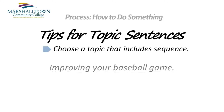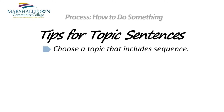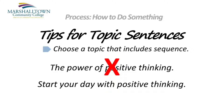Here's another example where a student wants to write about improving your baseball game. There's nothing wrong with this sentence in general, but it doesn't really indicate that the paragraph will explain a process or sequence of events. A better topic sentence might be: Three steps to a better swing. Notice that adding the words three steps immediately lets the reader know that this paragraph explains how to do something in a step-by-step process. In this example, the student wants to show readers how to use positive thinking to improve their lives. A better topic sentence might be: Start your day with positive thinking. Notice how the words start your day immediately show the reader that your paragraph is about a process or a sequence of events.